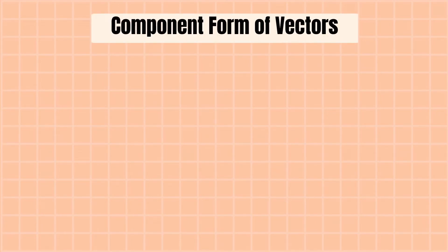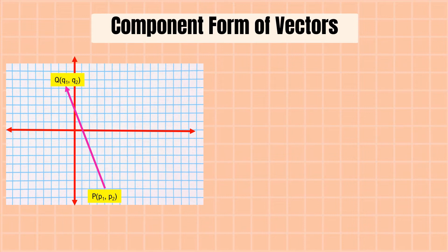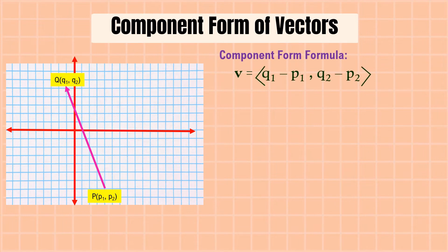Next, we're going to discuss how to find the component form of vectors. Suppose we have the initial point at P(p₁, p₂) and the terminal point at Q(q₁, q₂). To find the component form, we use the formula: (q₁ − p₁, q₂ − p₂).